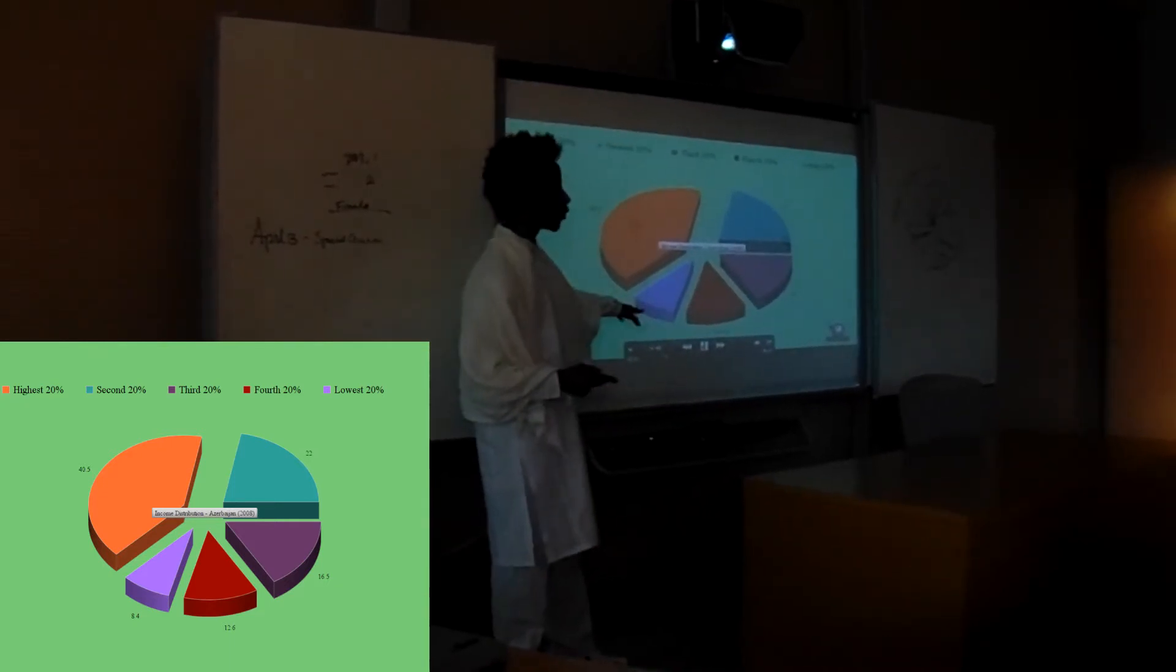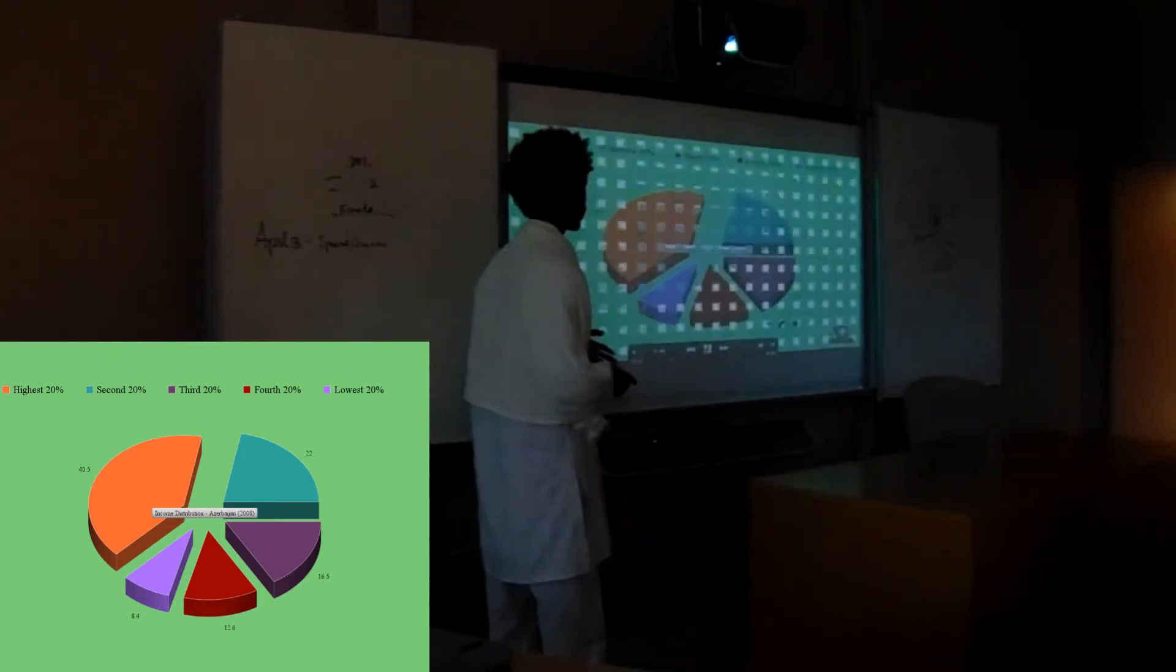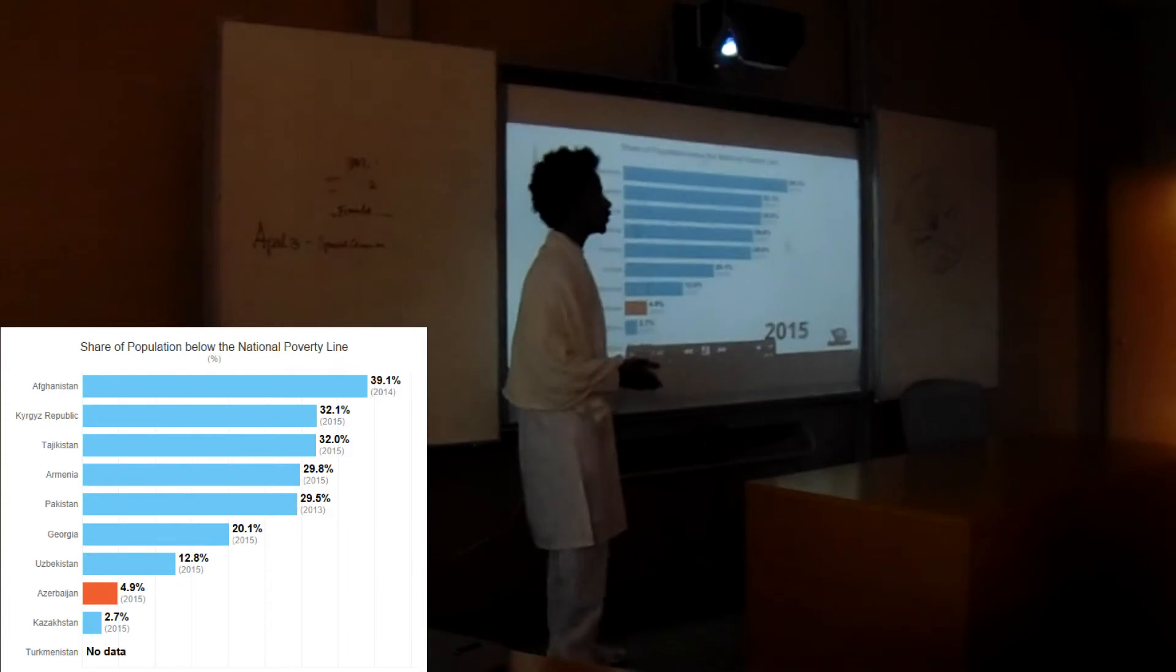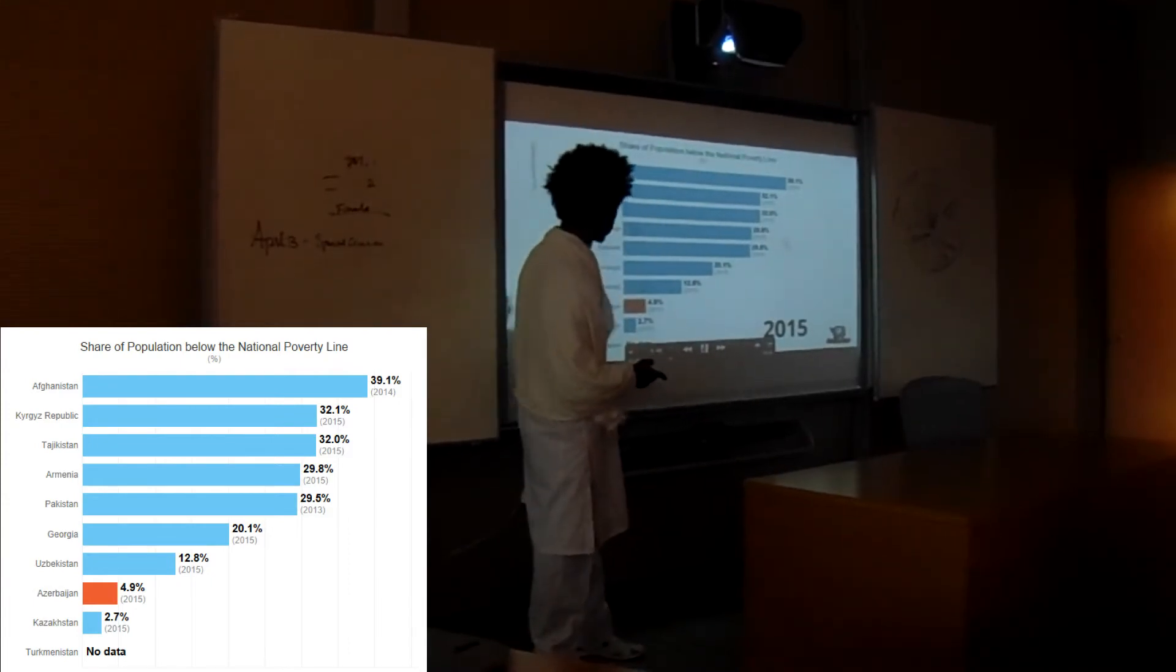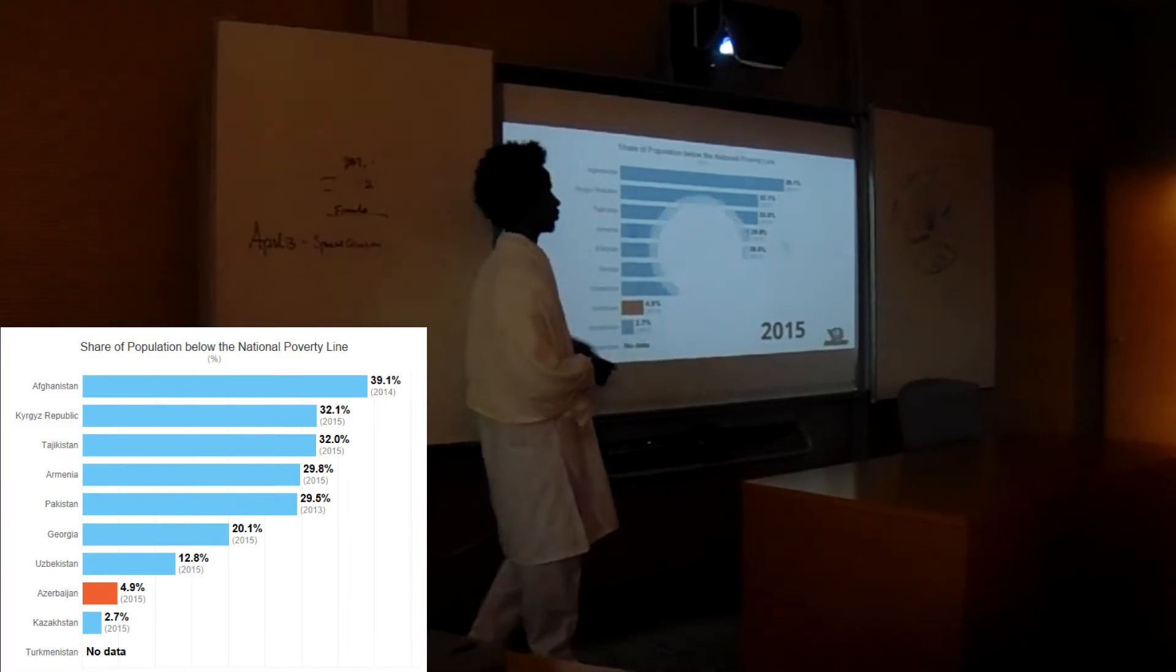and 8.4 only for the lowest 20%. When we look at the national poverty line, Azerbaijan has actually good progress because from the aging countries, it only has 4.9% of the population that is under the national poverty line.